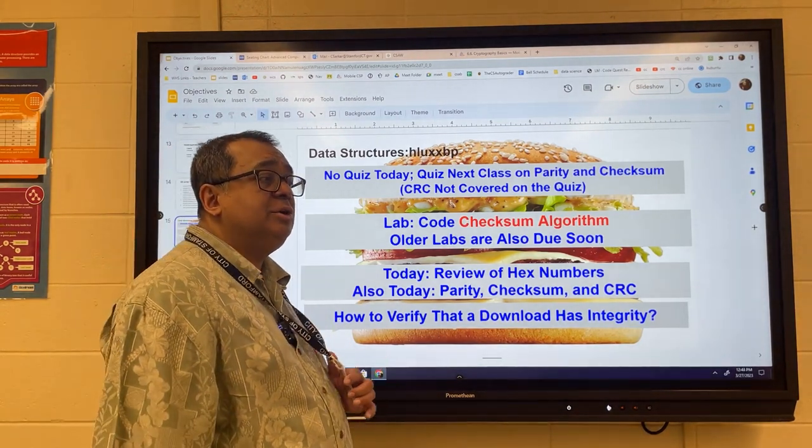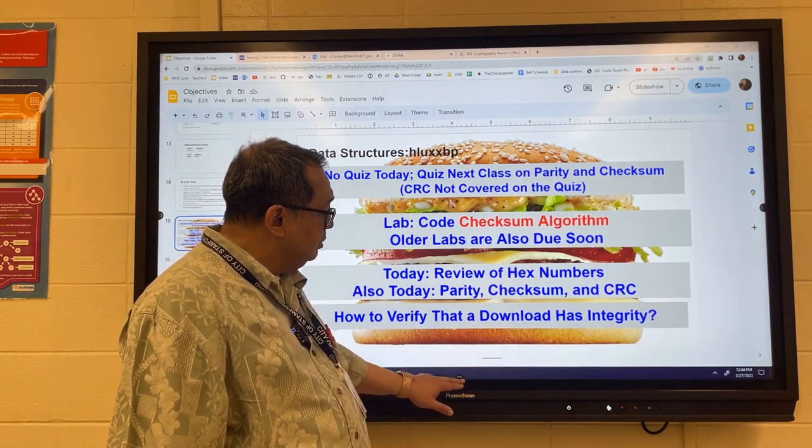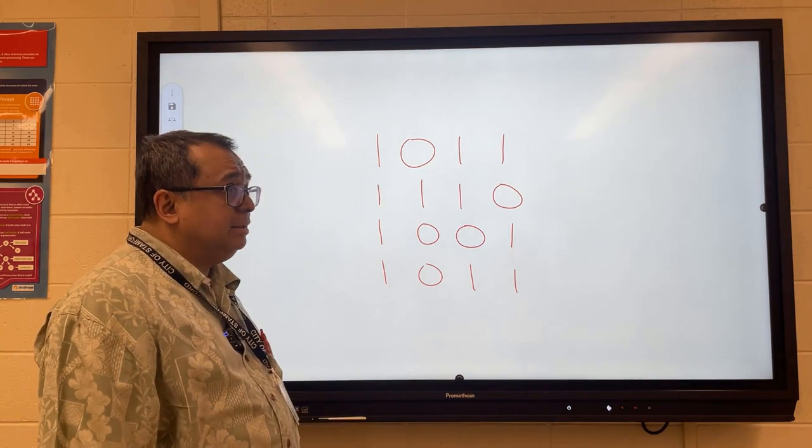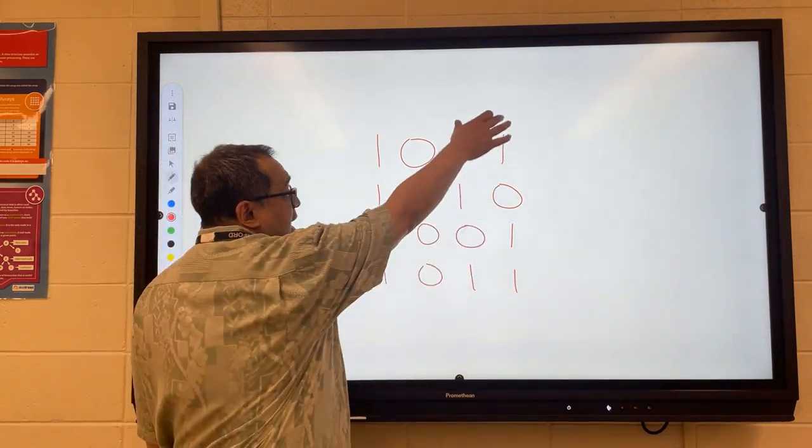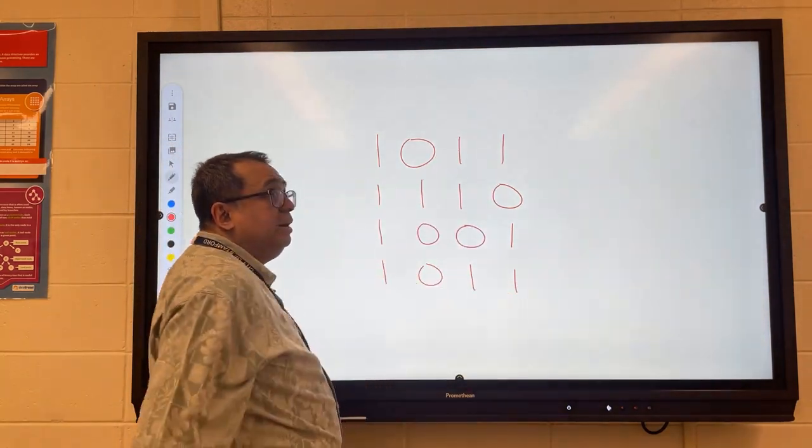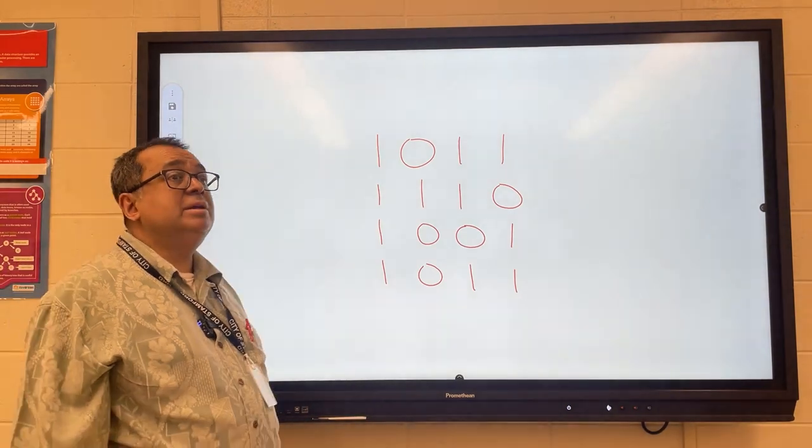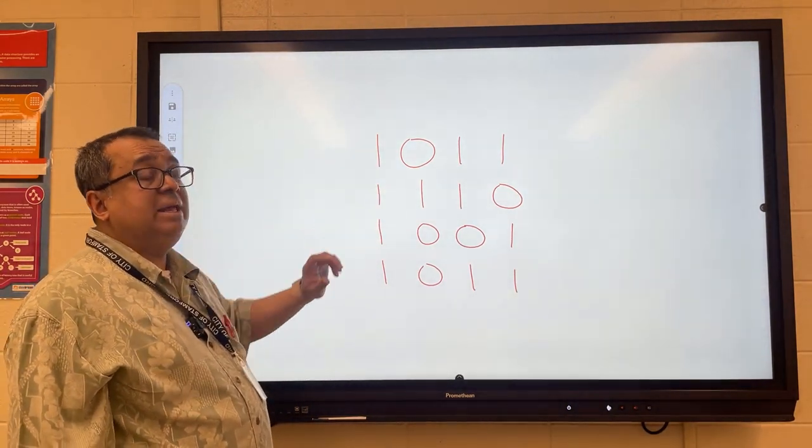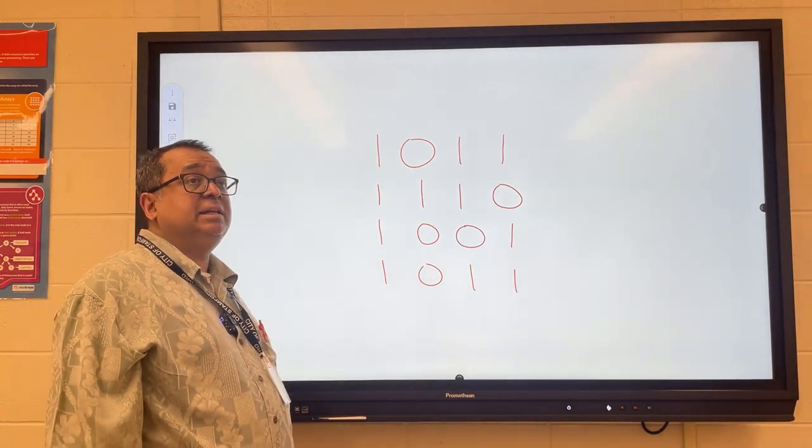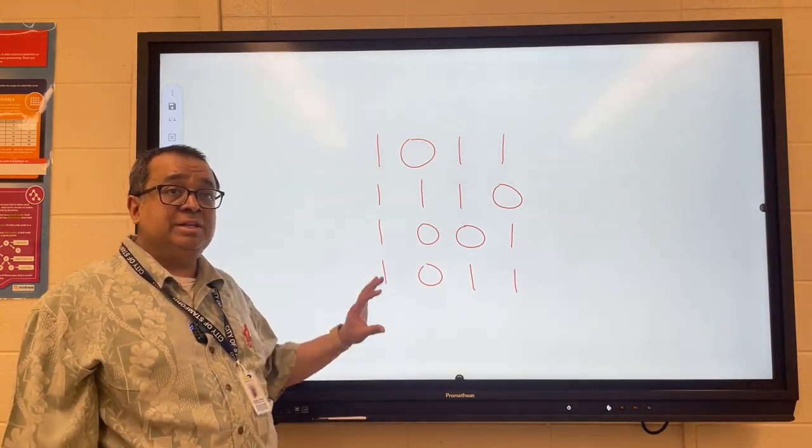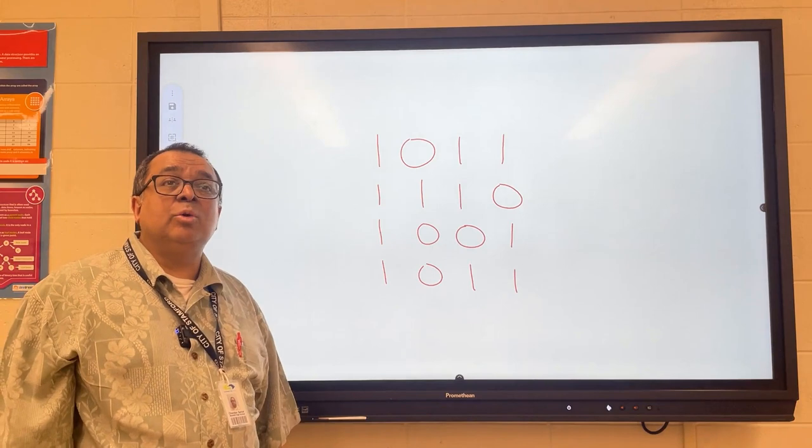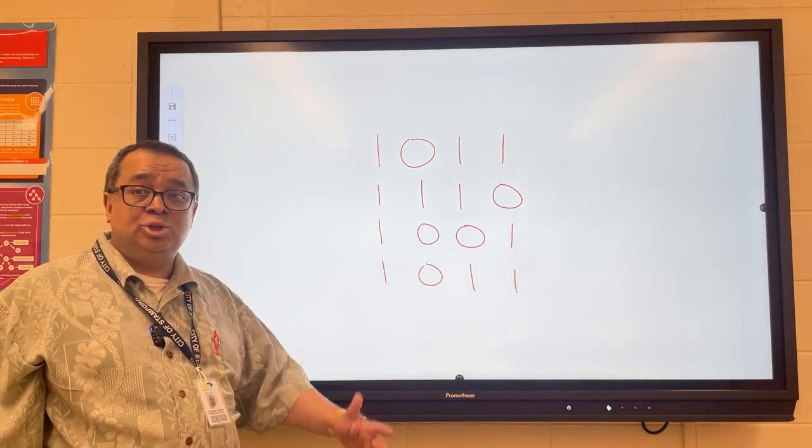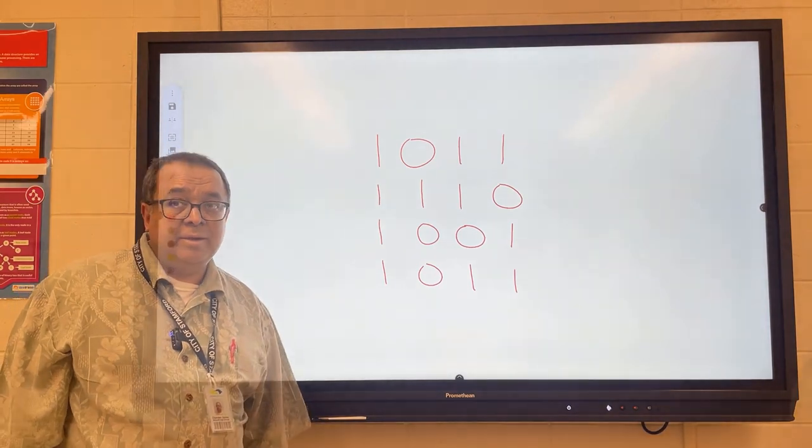So just as a quick review, I would like you to turn to the person next to you and look at this packet of information right here. I'll tell you right now that the last column and the last row are using parity grid. I'll give you a hint: one of the bits has accidentally flipped during transmission, so one of these bits is an error. I'd like you to work with your partner to figure out which bit is an error, what value it is now, and what value it should be.